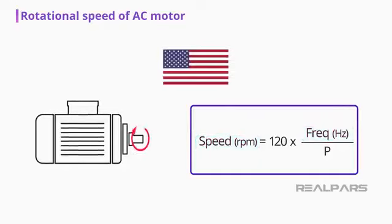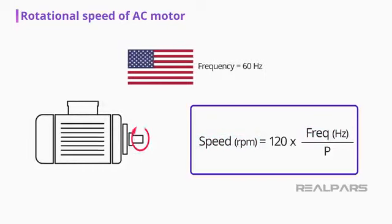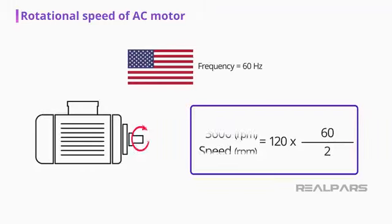In the United States, electric power utilities provide alternating energy with a frequency of 60 Hz. A standard two-pole AC motor operating at this frequency provides a nominal rotation of 3600 RPM.